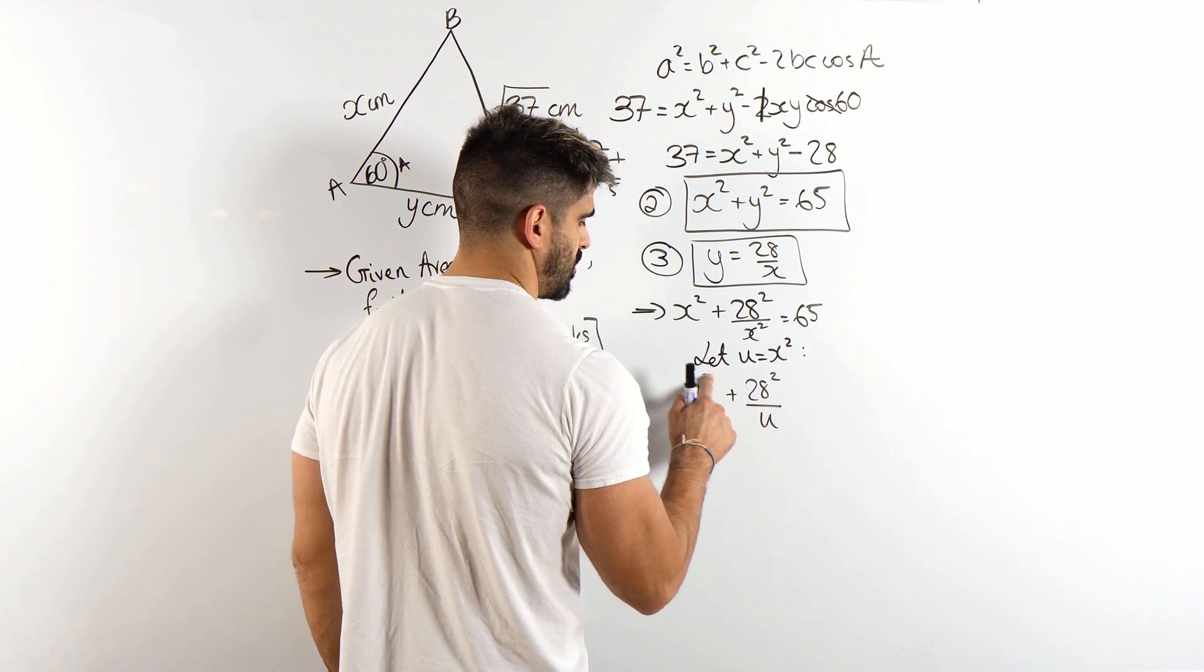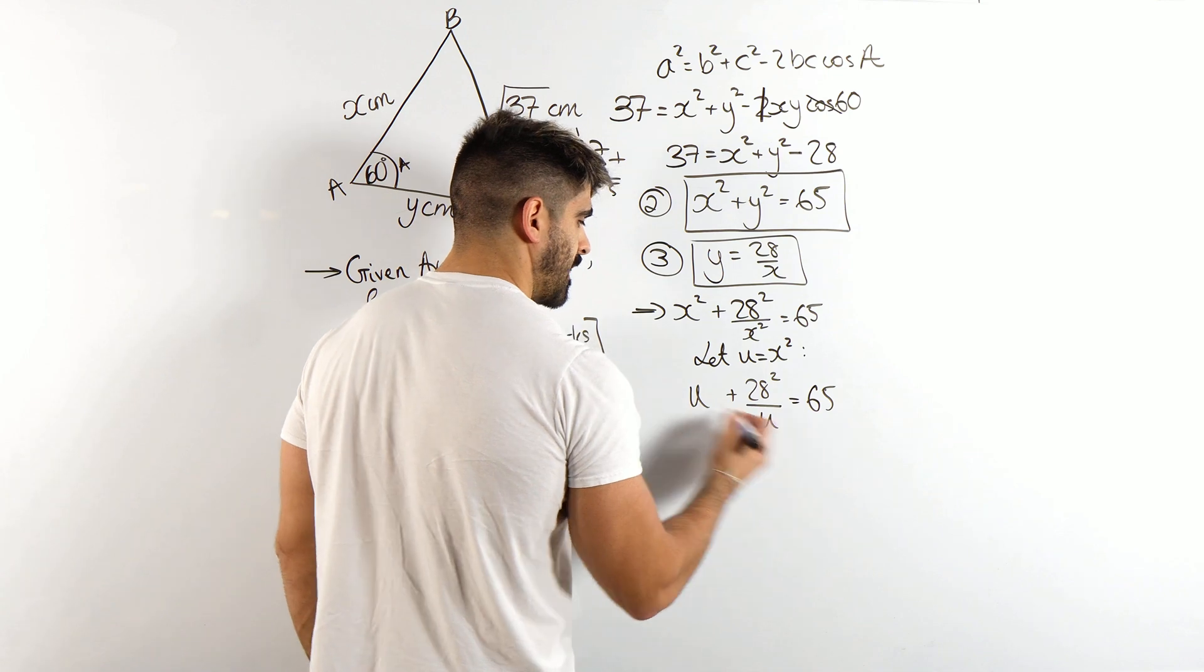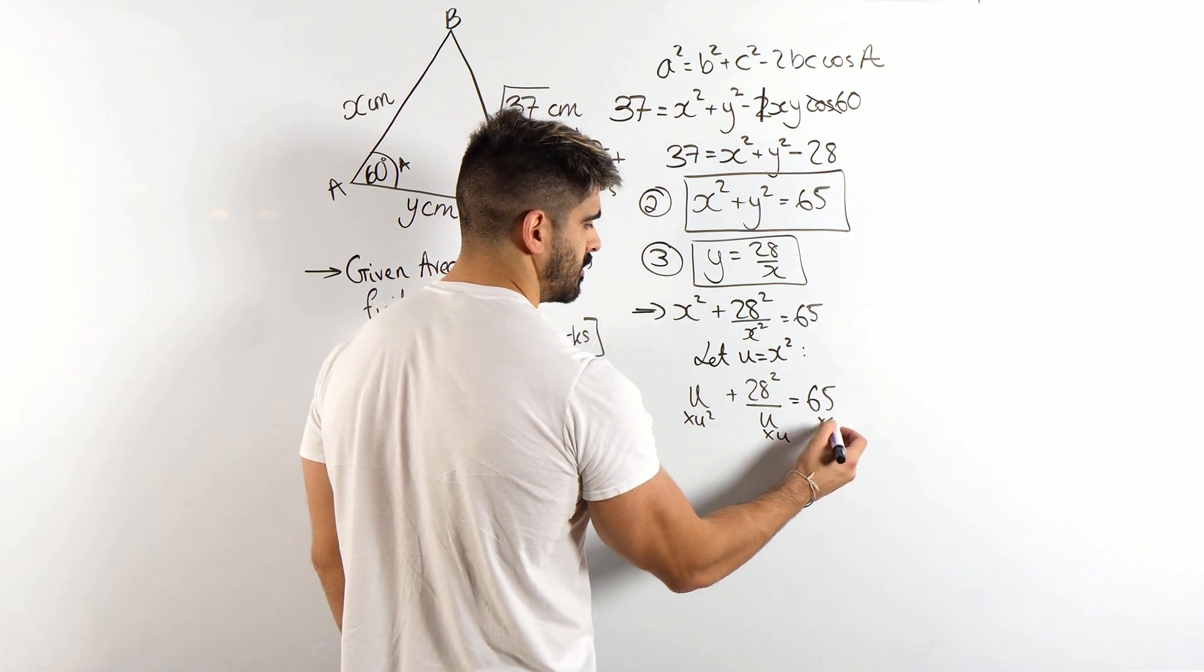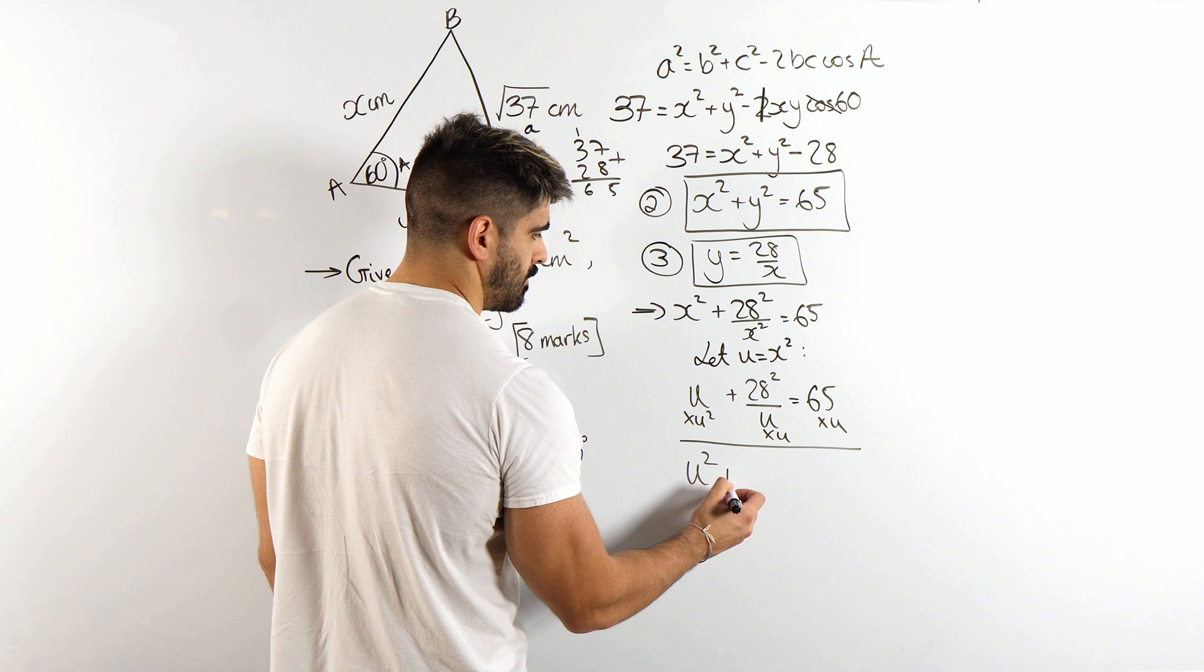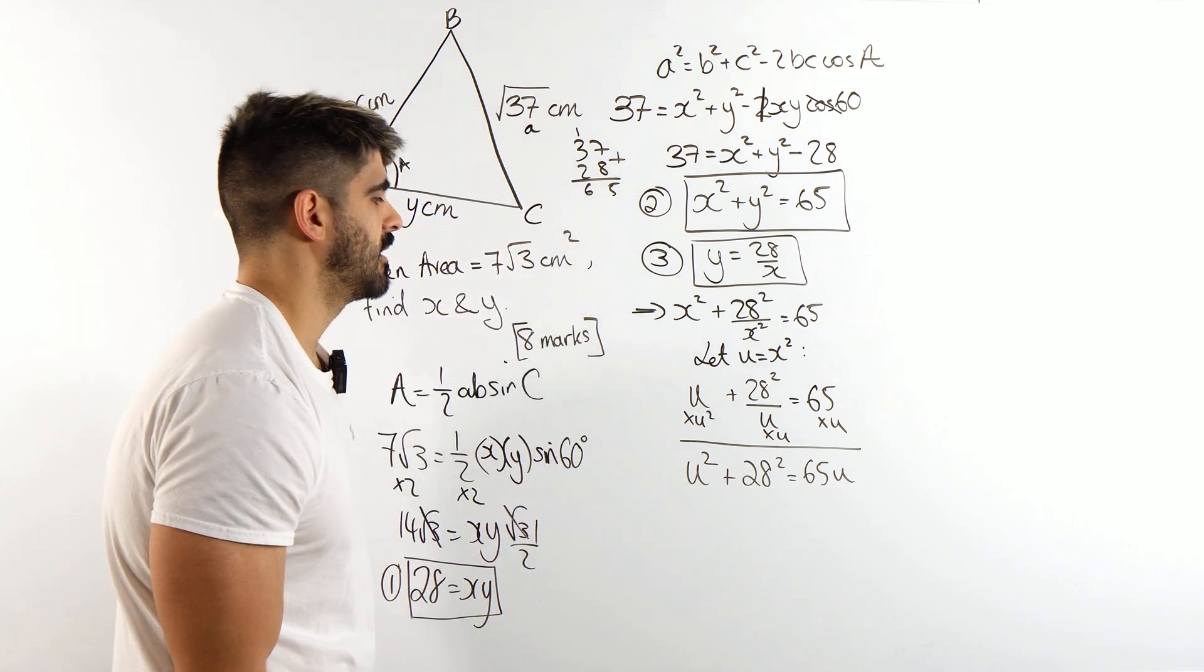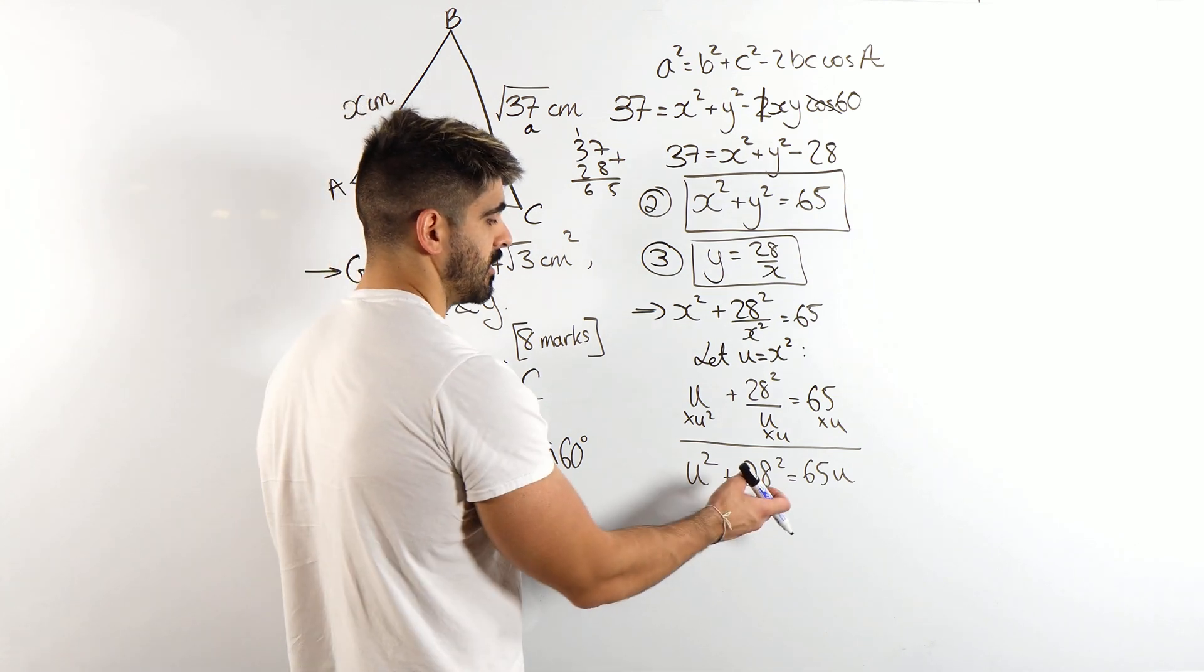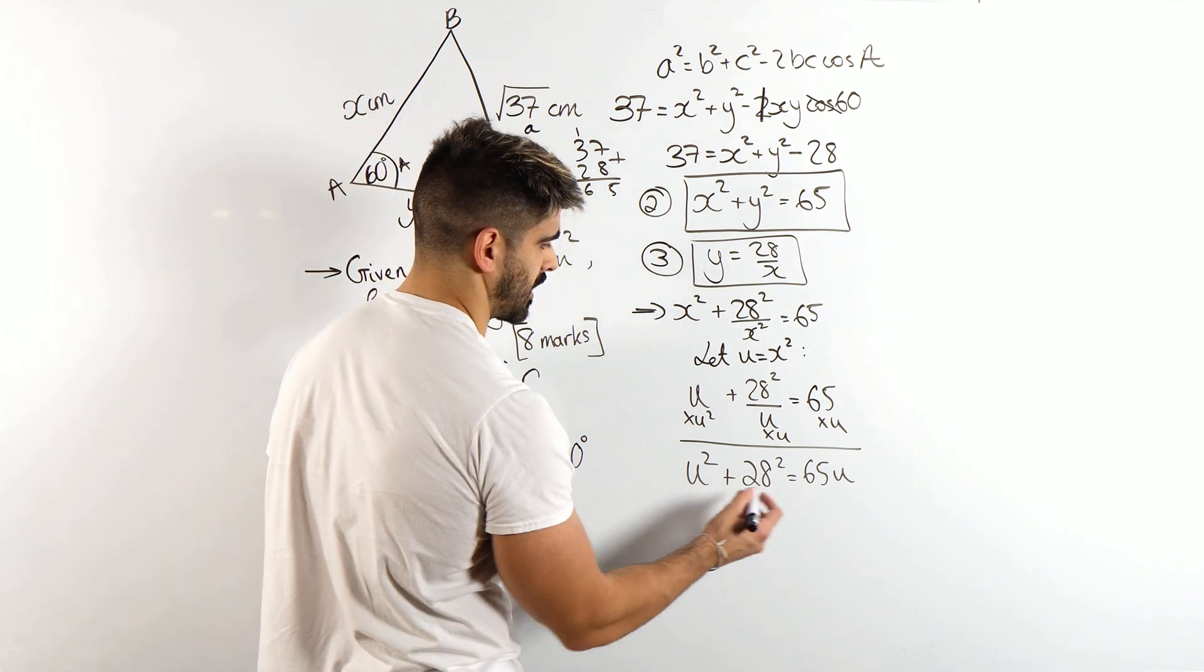However, if I just notice that there's x squared common, I could let u equal x squared. And when I do that, it's actually just a quadratic. Sorry, it's not u squared, it's just u. But when I times through by u, it will become that. So times through by u, that becomes u squared plus 28 squared is 65u. And now we need to move that 65u to the other side. And we probably want to work out what the 28 squared is.